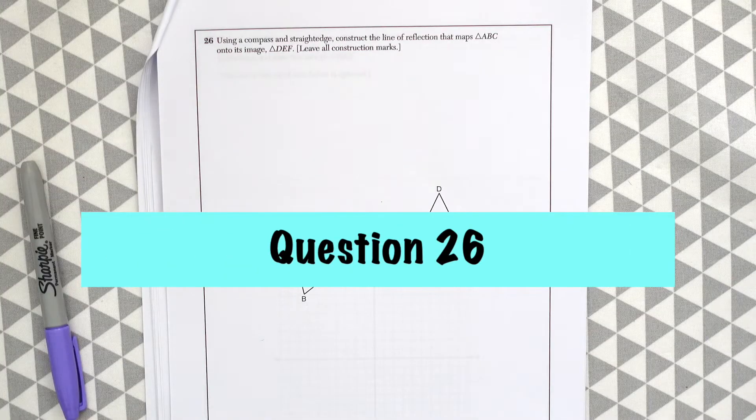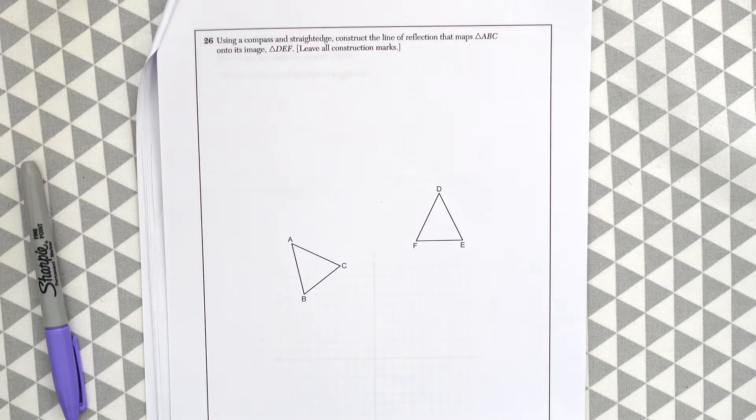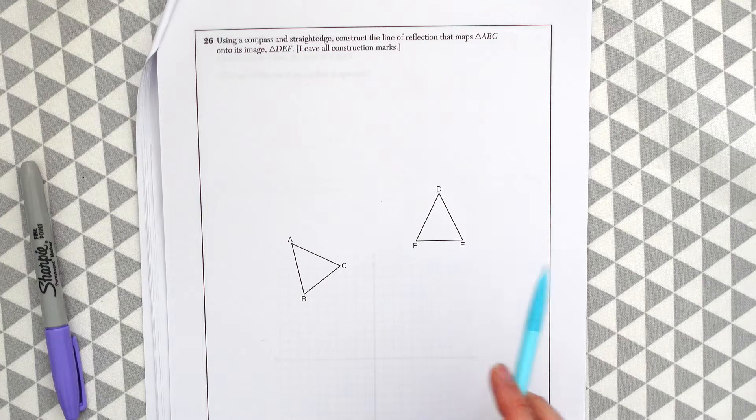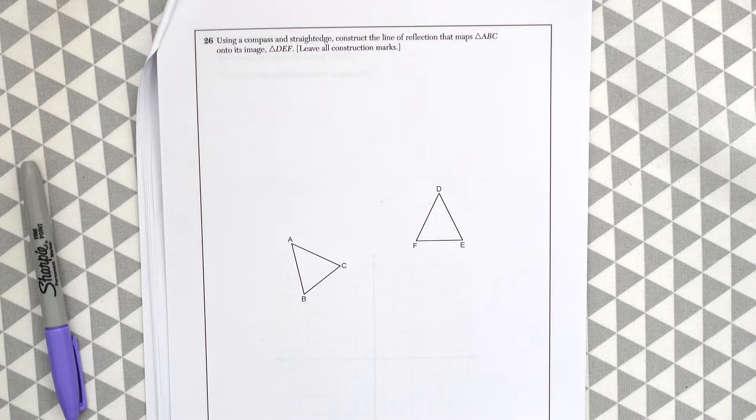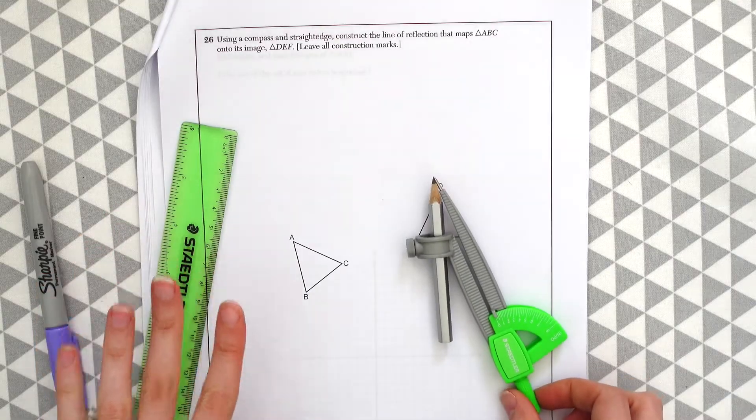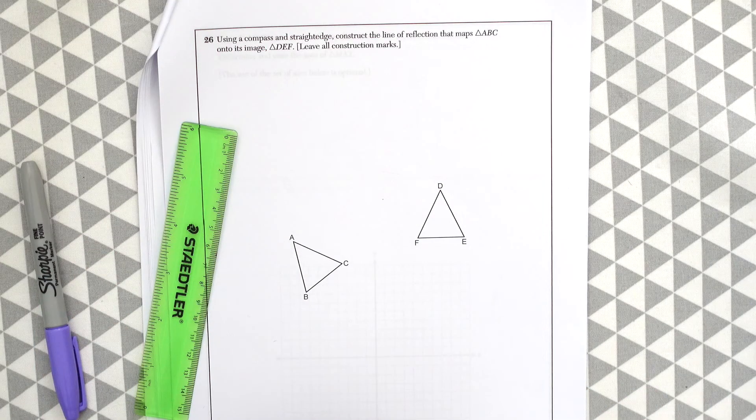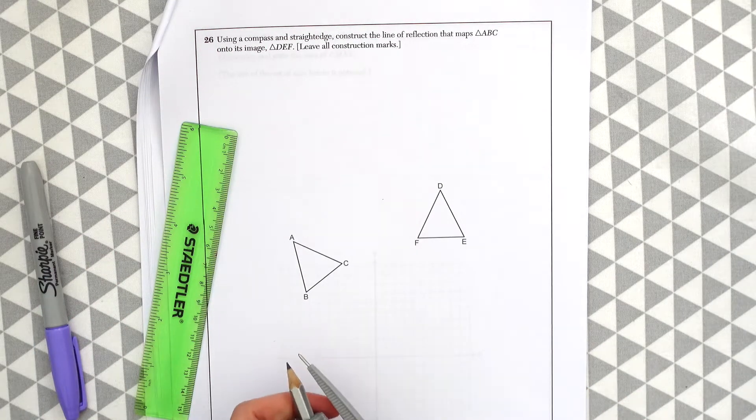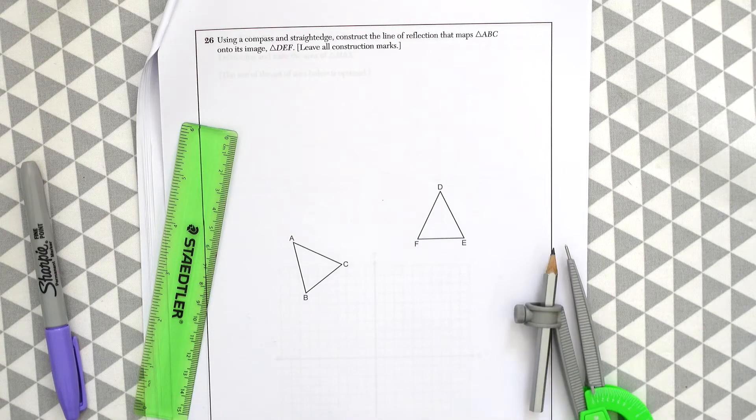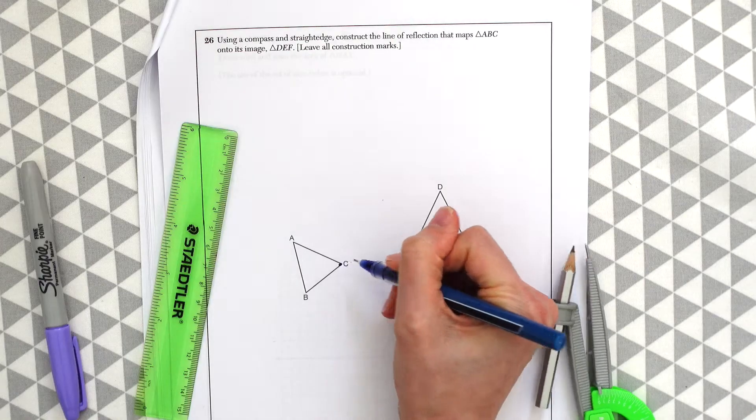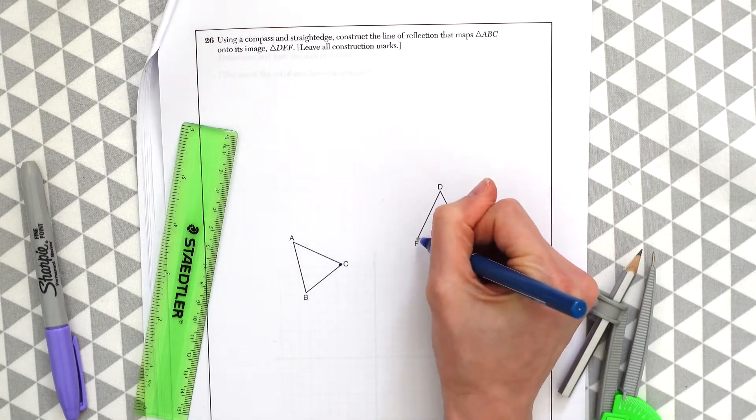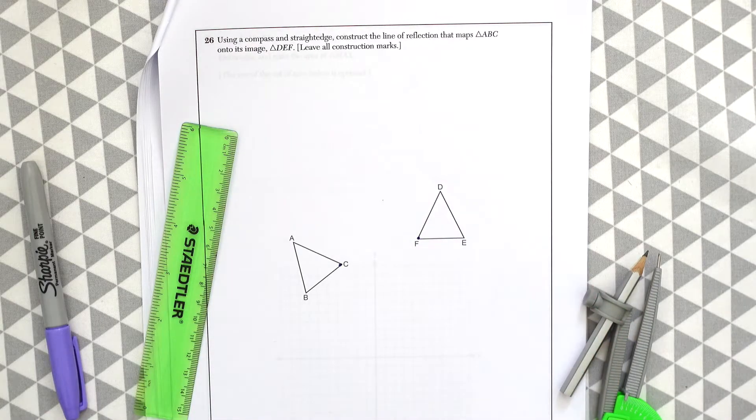Question 26. Using a compass and straight edge, construct a line of reflection that maps triangle ABC onto its image triangle DEF. So here we're going to use a compass and straight edge. The first thing we're going to do is pick a pair of points that are before the reflection and after the reflection. So I'm going to be focusing on point C and then after the reflection, this point becomes point F.